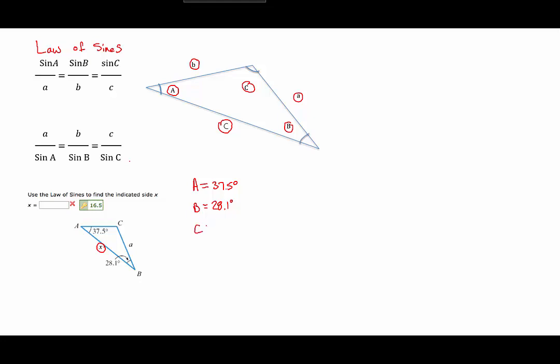And we can find angle C because we know that the sum of all of the interior angles for a triangle is 180 degrees. So angle C will be 114.4 degrees. Now let's assume that side A is 11. Then we'll find sides B and C.